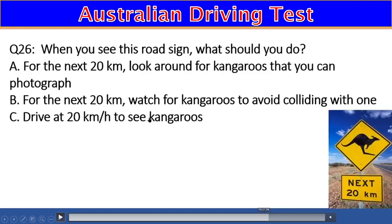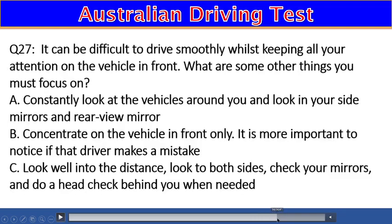Question 26: When you see this road sign, what should you do? A) Look around to photograph kangaroos for the next 20 km, B) For the next 20 km, watch for kangaroos to avoid colliding with one, C) Drive at 20 km/h to see kangaroos. The right answer is B — watch for kangaroos to avoid a collision.